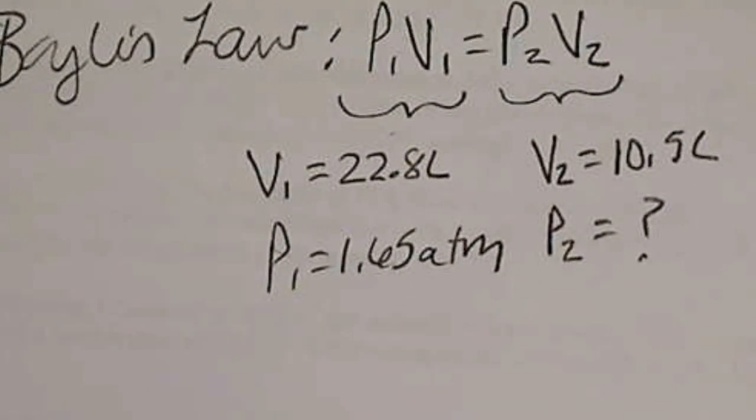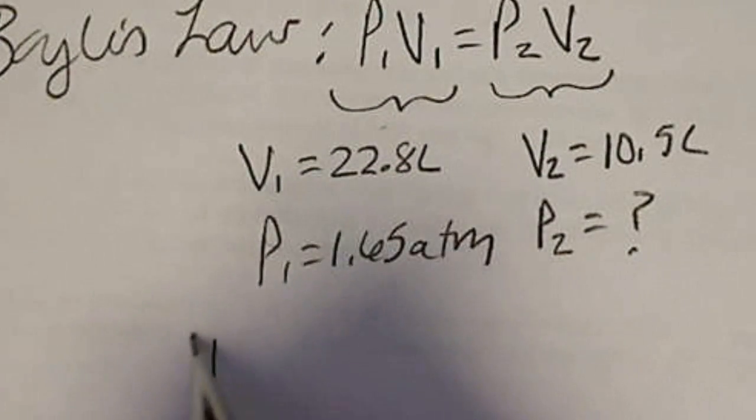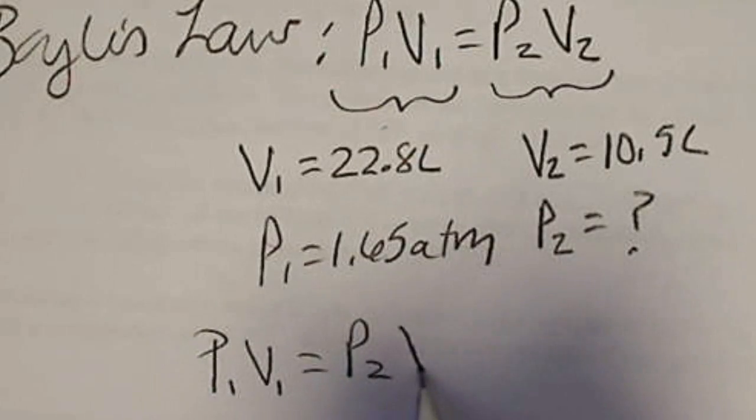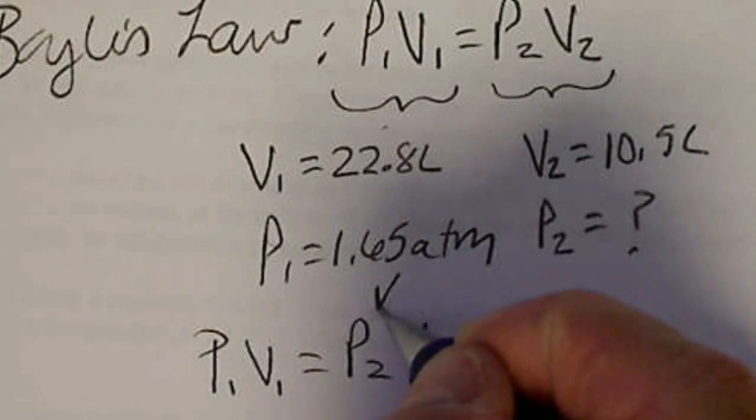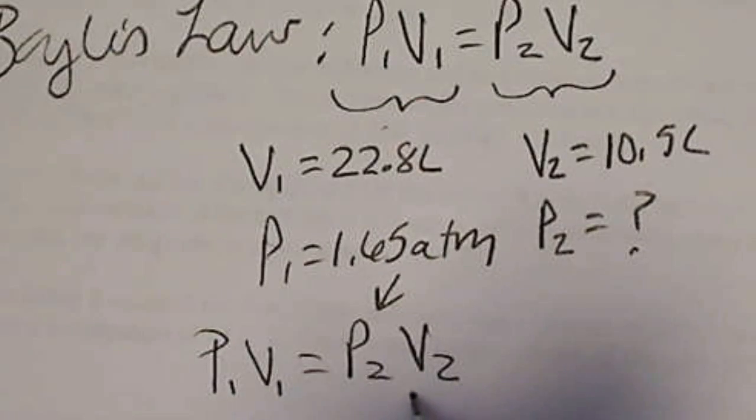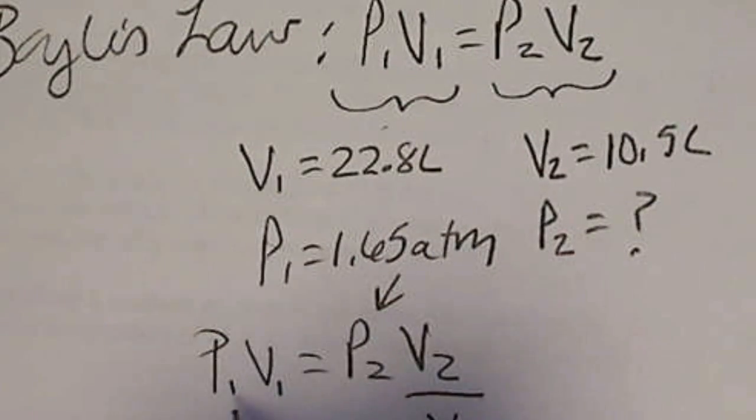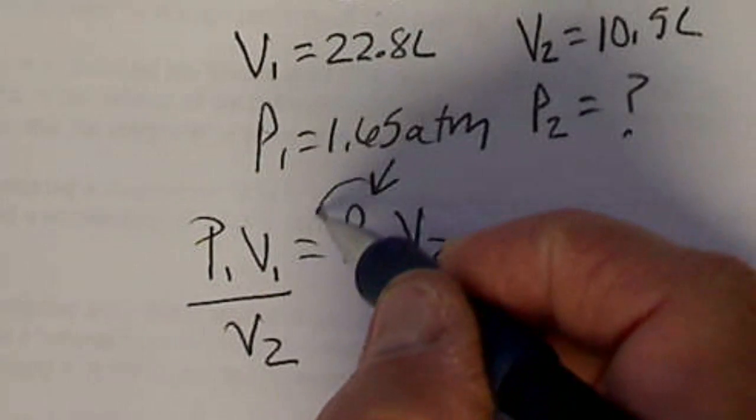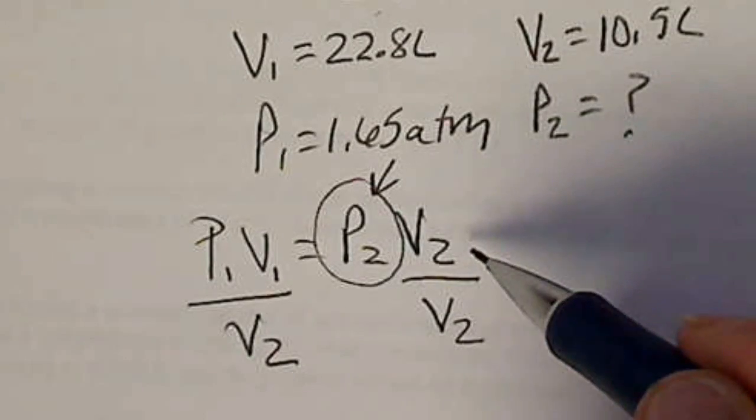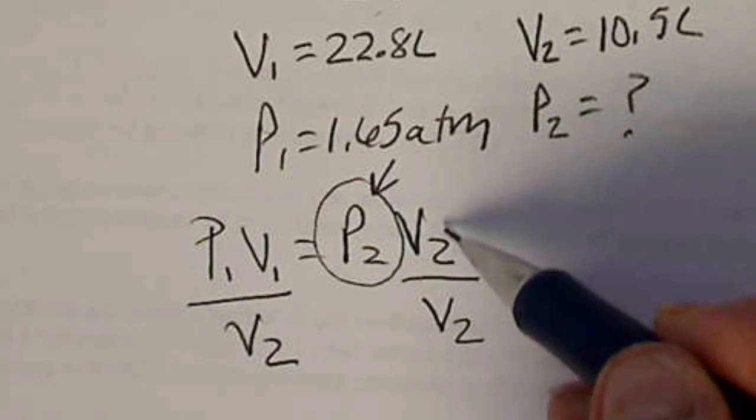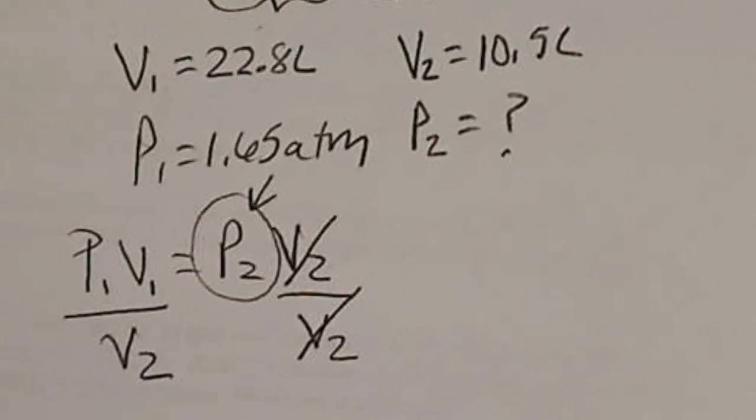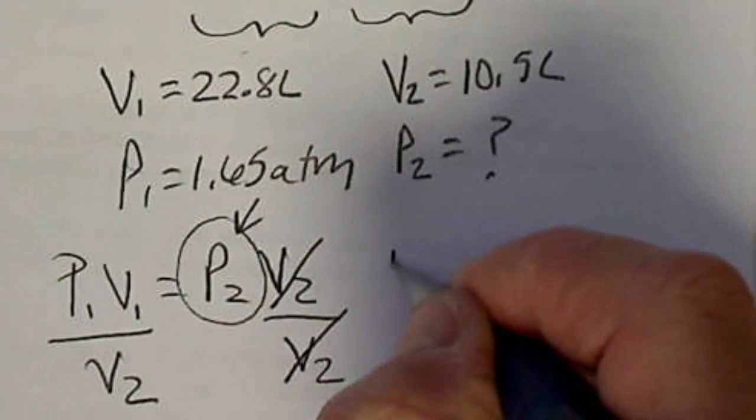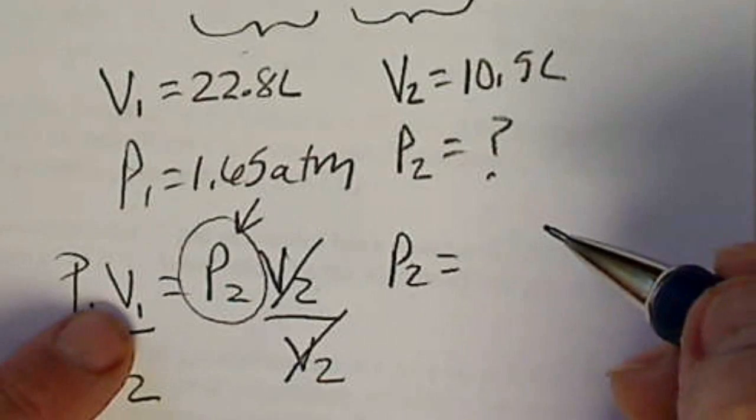So if we set up Boyle's Law mathematically and solve for P2, then we'll have the answer. So if we write P1V1 equals P2V2, this is our unknown. So I'm going to divide both sides of the equation by V2. And the whole concept of algebra is to get this all by itself. So to undo multiplication, we're going to divide.